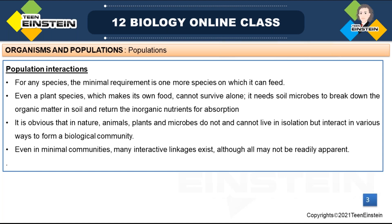Even plant species cannot survive alone. Plants depend upon animals for pollination. So in nature, plants, animals, microbes, and water — these organisms cannot occur in an isolated way. They interact, and there will be interaction between all these organisms forming a biological community. This type of interaction where two or more species interact with each other is called inter-specific interaction.